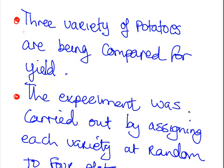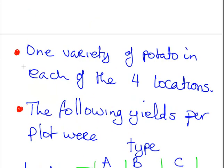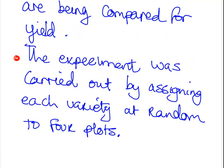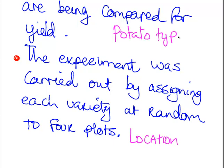First off, this is our example. Three varieties of potatoes are being compared for yield, so that is our primary variable. The experiment was carried out by assigning each variety of potatoes at random to four different plots. So essentially there is a second variable going on here, and that is location. So there is potato type, and there are three levels, and there is location which is four levels.